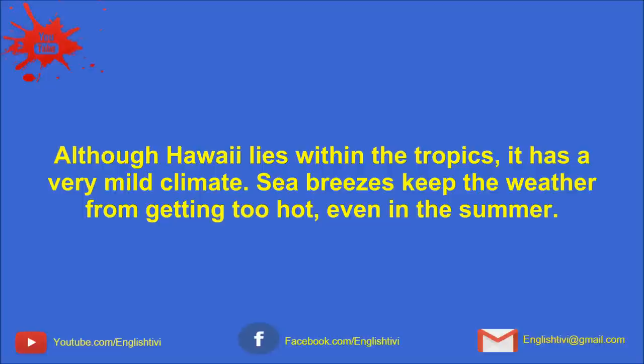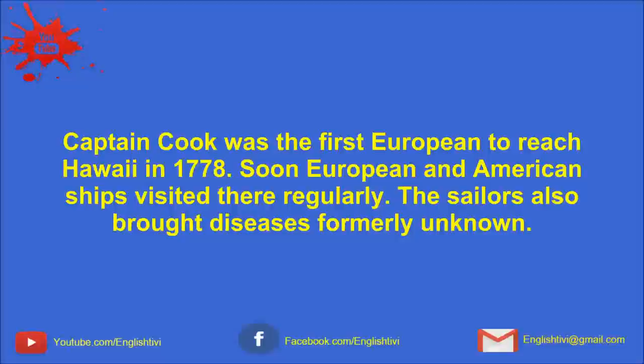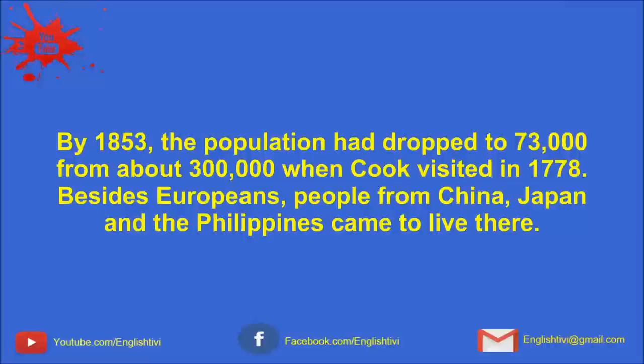Although Hawaii lies within the tropics, it has a very mild climate. Sea breezes keep the weather from getting too hot, even in the summer. Many edible plants grow in abundance there, so it was not difficult for the Hawaiians to live very comfortably without working hard. Captain Cook was the first European to reach Hawaii in 1778. Soon, European and American ships visited there regularly. The sailors also brought diseases formerly unknown. By 1853, the population had dropped to 73,000 from about 300,000 when Cook visited in 1778.